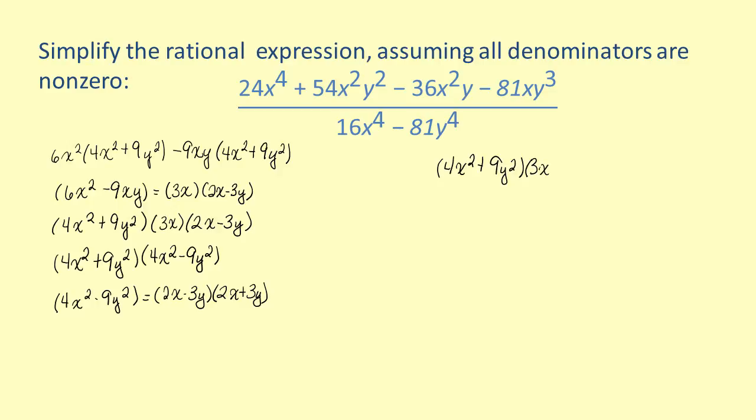By factoring the numerator and denominator, this is an expression equivalent to the original rational expression. The denominator is now in simplest form. The final step in simplifying the rational expression is cancelling all common factors.